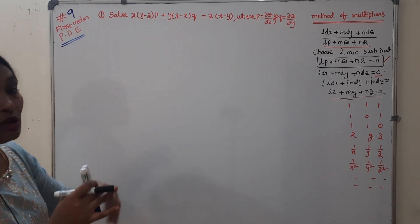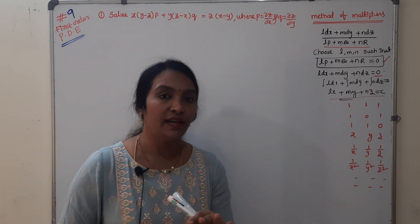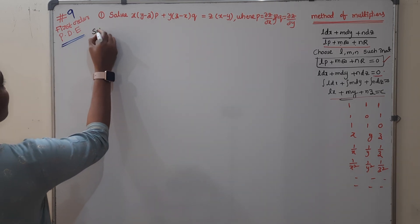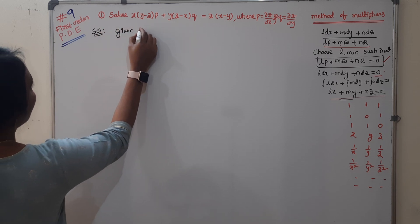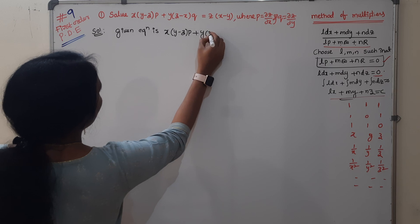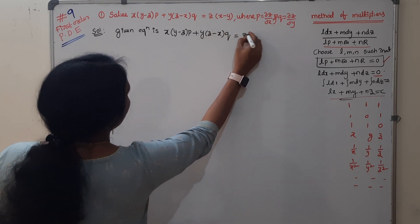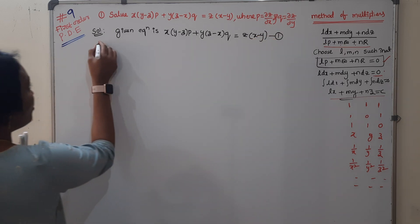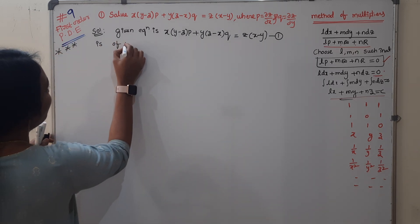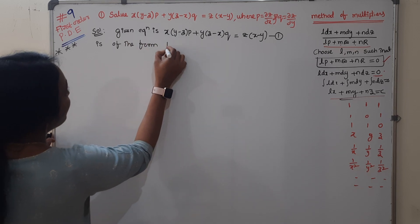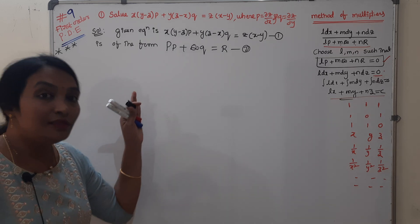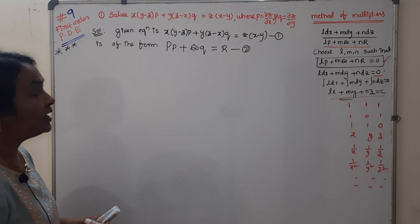Now, this is the problem. If you have the first problem, you may be confused. First, identify whether it is linear or non-linear. In this video, I am going to explain the method of grouping. The given equation is: x(y − z)p + y(z − x)q = z(x − y). This is of the form capital P·p + Q·q = R, which is the Lagrange's linear equation.